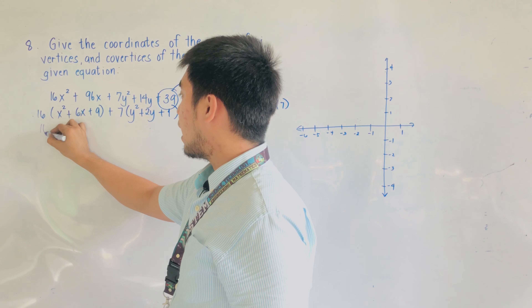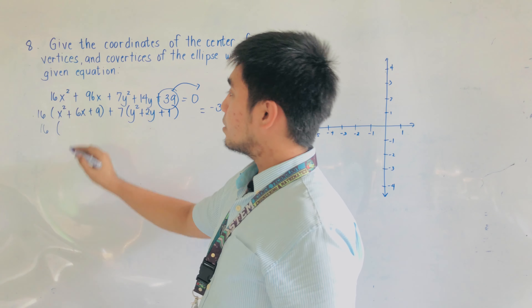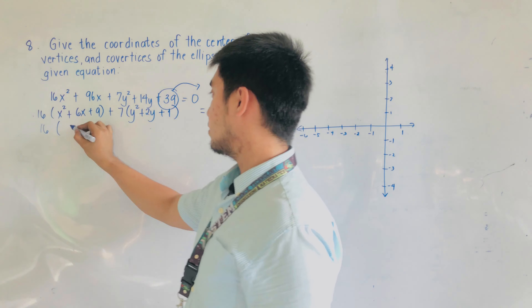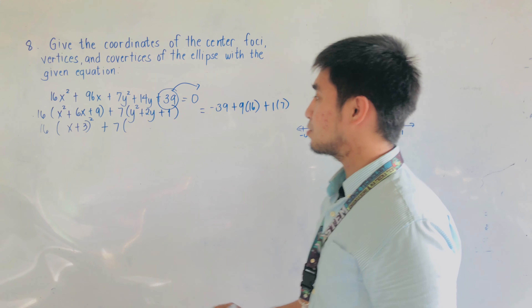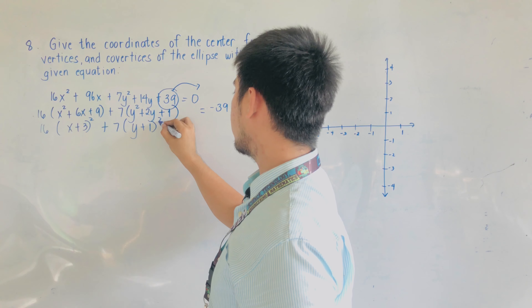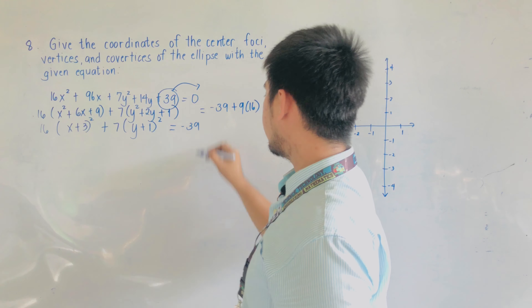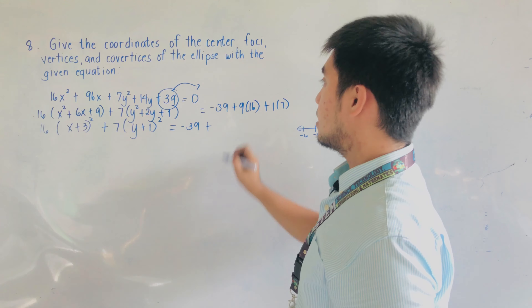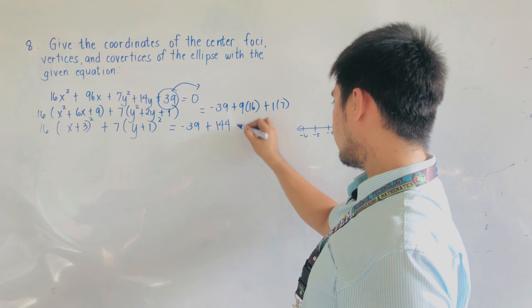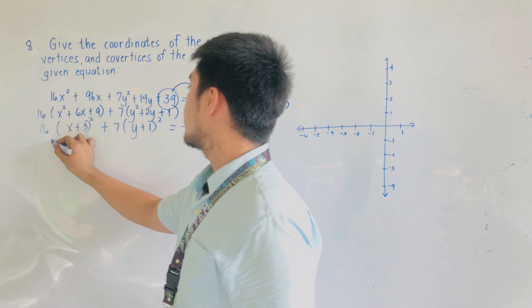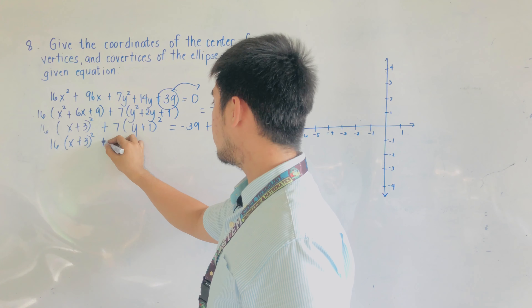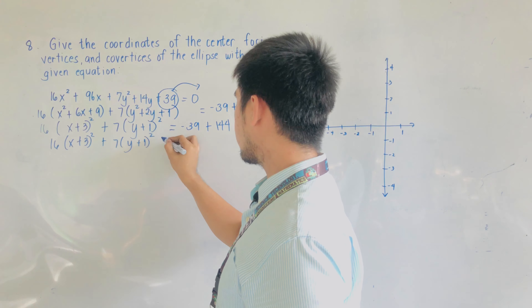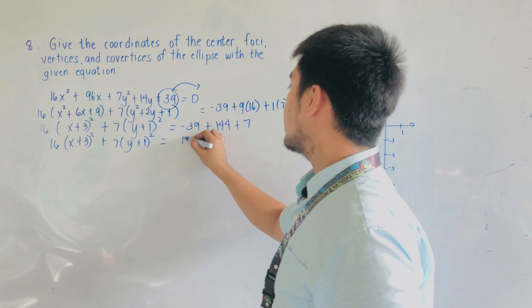Simplifying, we have 16 times the factor x squared plus 6x plus 9, which becomes (x plus 3) squared, plus 7 times the factor y squared plus 2y plus 1, which becomes (y plus 1) squared, equal to negative 39 plus 144 plus 7, giving us 112.